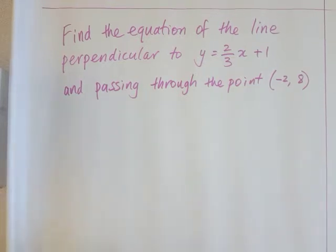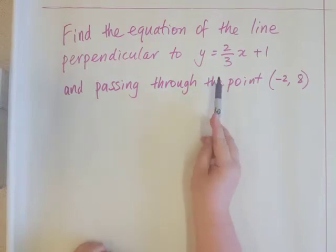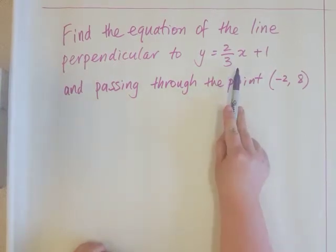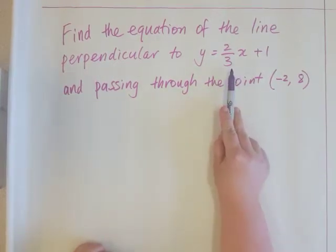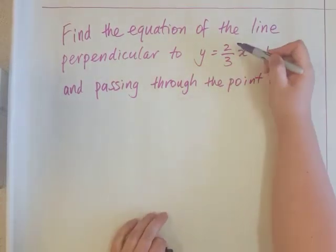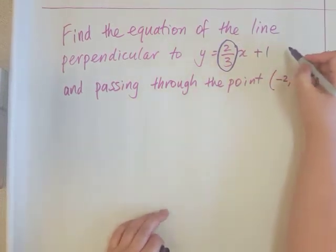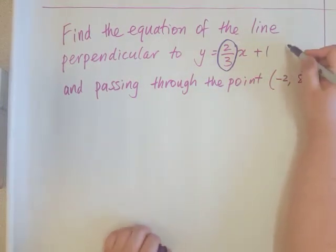So this question tells you that the line you want to find is perpendicular to this line here. First, let's look at this line and say what the gradient is. So here we can see the number multiplying by x is two thirds. So this has a gradient of two thirds.